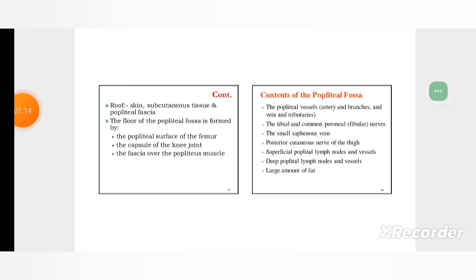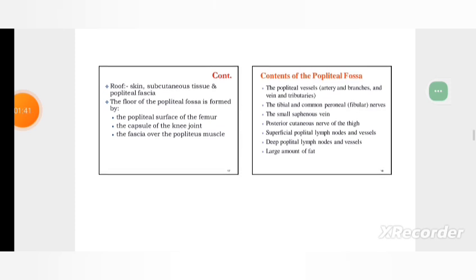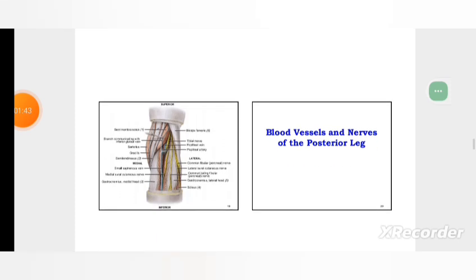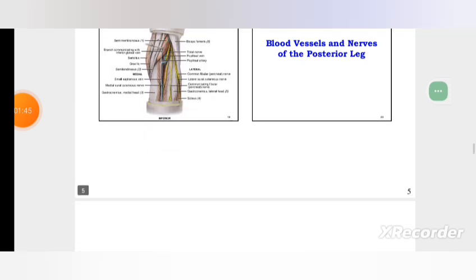Now, what are the contents of the popliteal fossa? The tibial and common peroneal nerves, the small saphenous vein, posterior cutaneous nerve of the thigh, superficial popliteal lymph nodes and vessels, deep popliteal lymph nodes and vessels, large amount of fat, and blood vessels and nerves of the posterior leg.